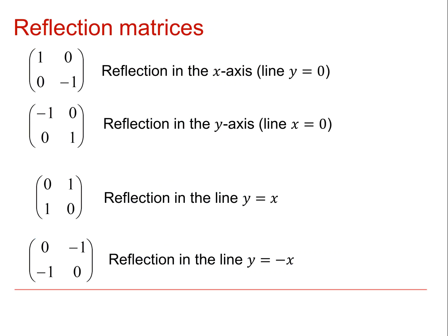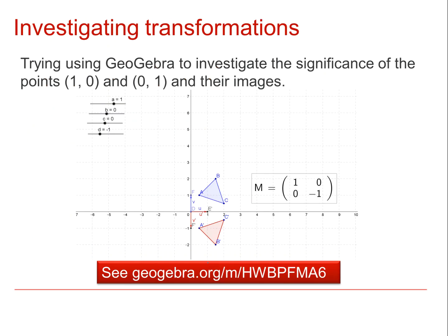Here are the four matrix transformations we've identified so far. Try using GeoGebra to investigate the significance of the points 1, 0 and 0, 1 and their images.